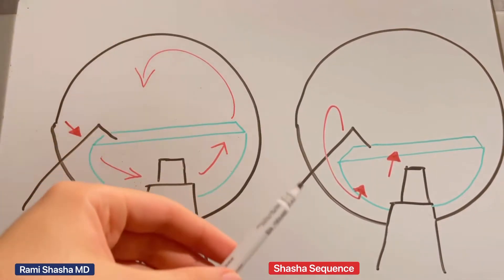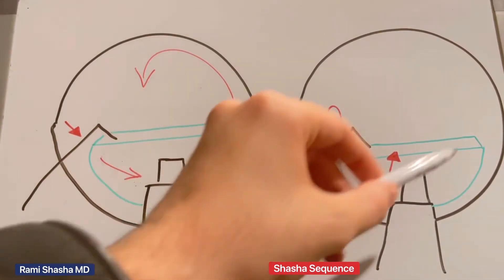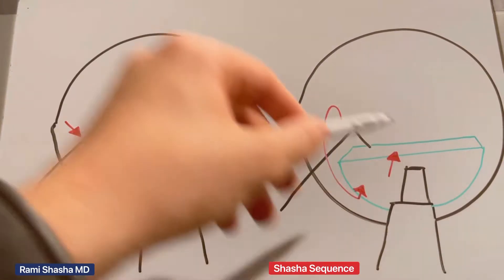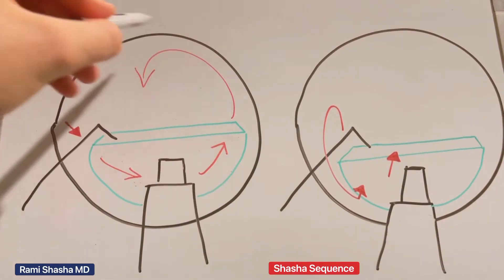With the alternative technique, you don't need to do any rotation. The hemi-nucleus is right next to the phaco tip. What's the point of rotating it all the way around?